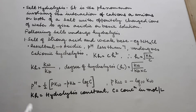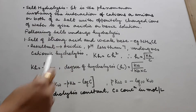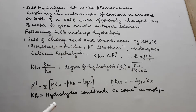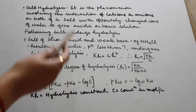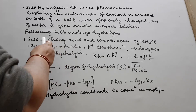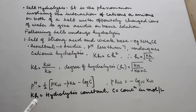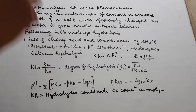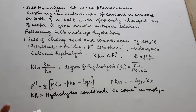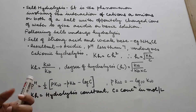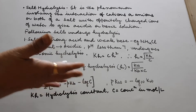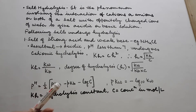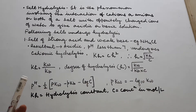One may ask: what will be the nature of the resultant solution of NH4Cl when dissolved in water? If you add water, it will form NH4OH and HCl. Out of the two, HCl is a stronger acid. Hence, the resultant solution will be acidic in nature — that acidic nature will be dominating. So the pH will be less than 7. Since H⁺ ions are dominating in the solution, we call it cationic hydrolysis.